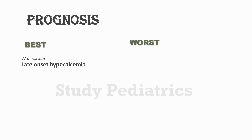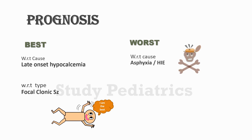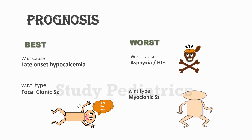Prognosis can be divided into best prognosis and worst prognosis. Best prognosis with respect to cause is late onset neonatal hypocalcemia, and with respect to type is focal clonic seizures. Worst prognosis with respect to cause is asphyxia or HIE, and with respect to type is myoclonic seizures.